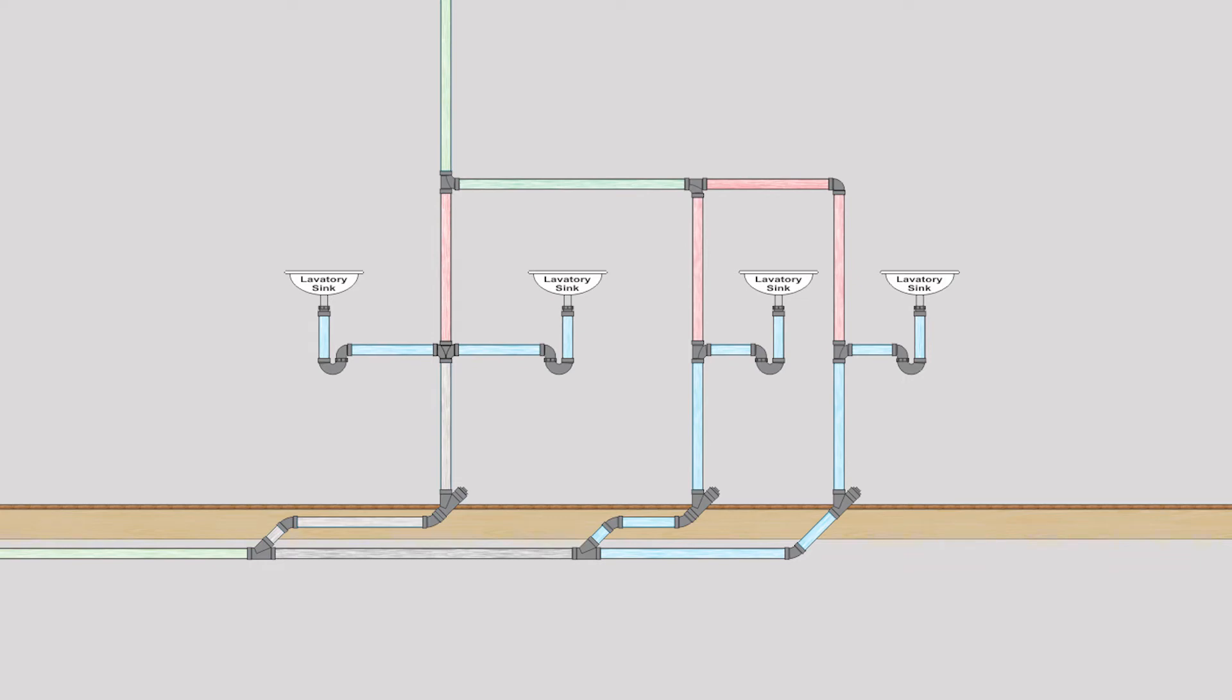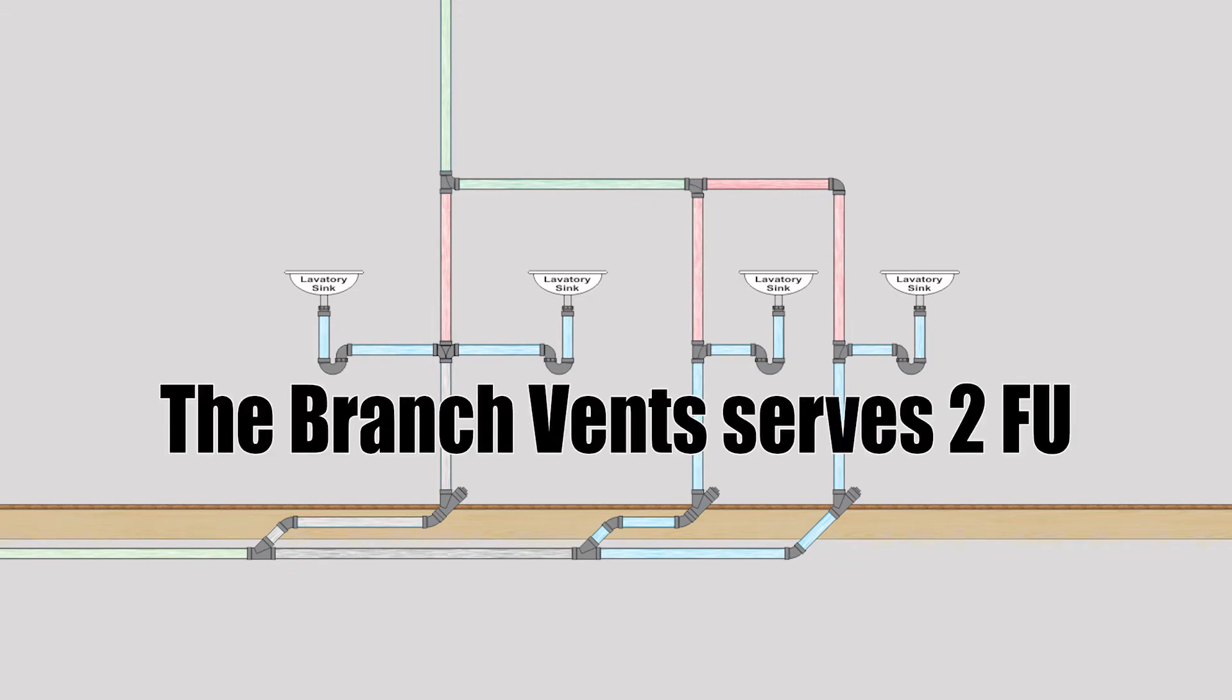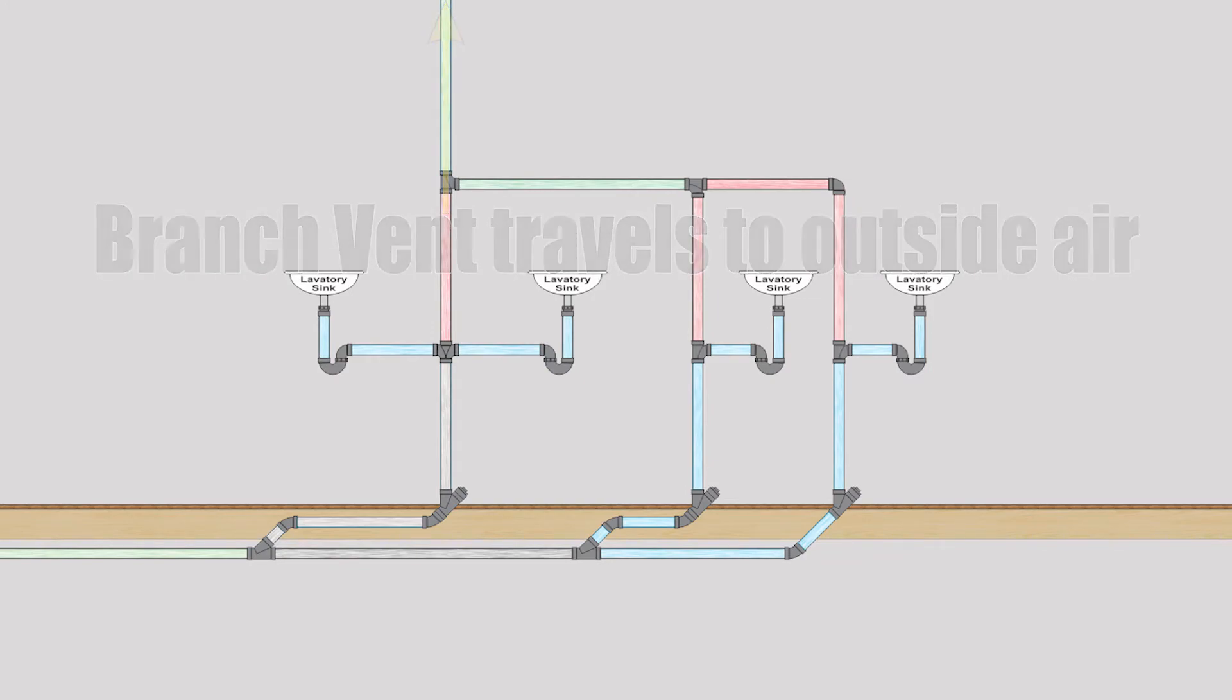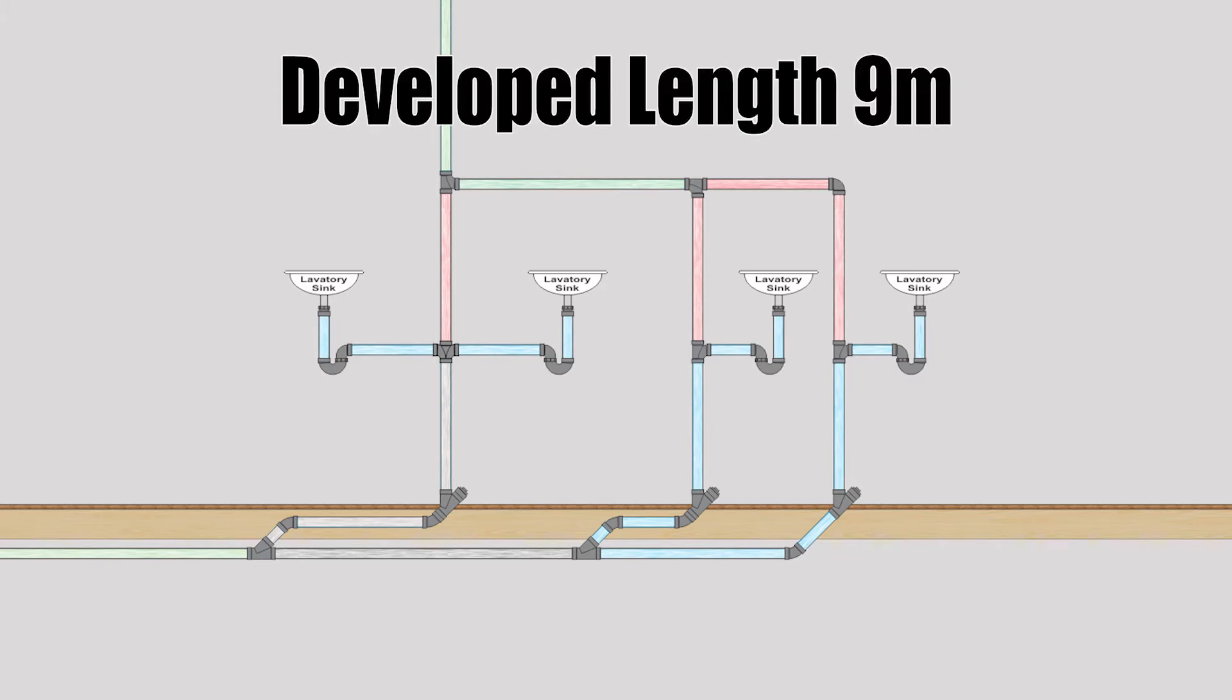So let's do one more example to reinforce this. We're going to bring up this picture again. Now let's start on this section of branch vent right here, which is just serving these two lav sinks. Therefore, there is two fixture units there. Now we need to establish a developed length. Well, we're going to say that where this goes outside of the picture goes up to outside air. And we're going to say that there's nine meters of developed length to the most distant soil or waste pipe, which is actually going to be at this lav connection right here.